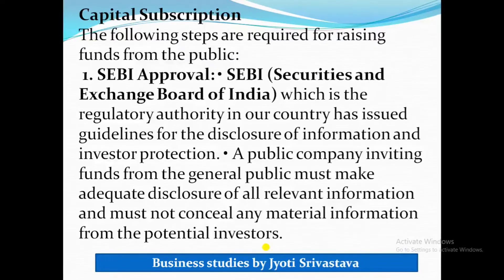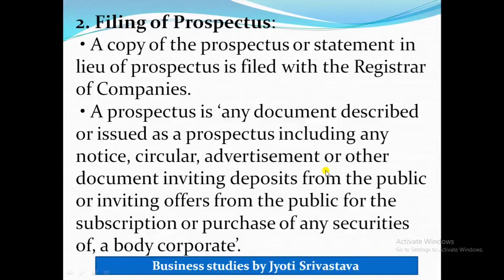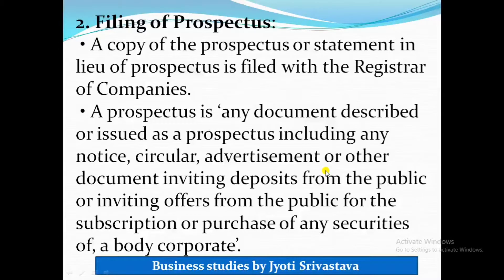Now, as Healthy Food Corner took SEBI approval, it wants to raise five lakh rupees from the public by allotting 50,000 shares of rupees 10 each. But how will the public know that Healthy Food Corner is selling shares? Just like other products are advertised, this company also advertises through a document. This advertisement is known as a prospectus.